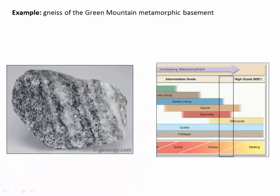Here's what some of those gneisses look like — they have a mineral assemblage that is very consistent with a high metamorphic grade. So we may see minerals like feldspar, quartz, garnet, and in some cases even staurolite or sillimanite.